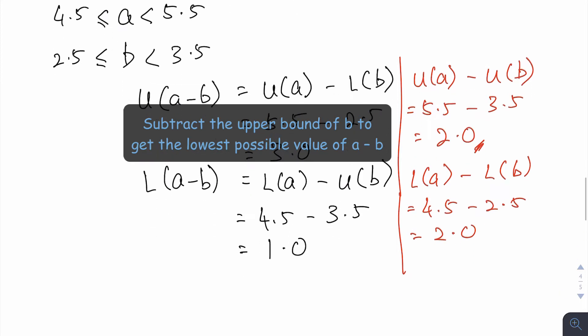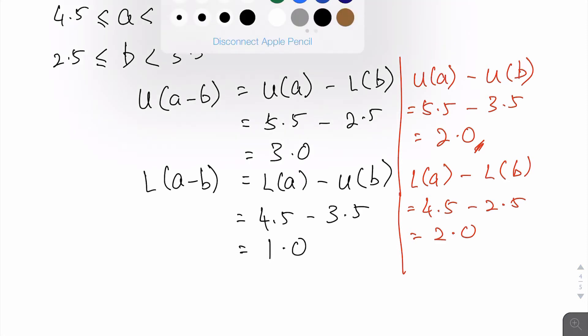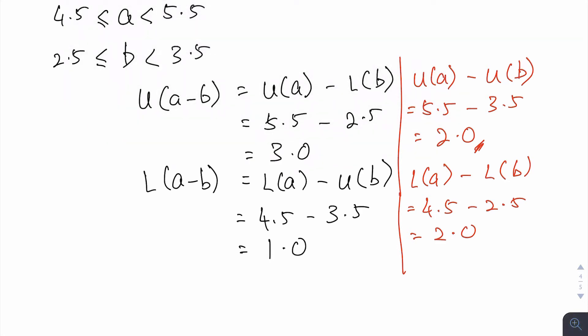So let us present the answer as a statement: a minus b has a lower bound of 1.0 and an upper bound of 3.0. That's it.